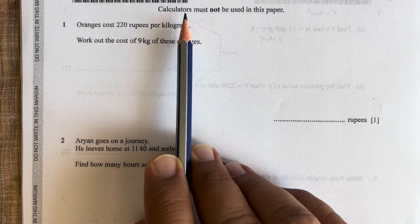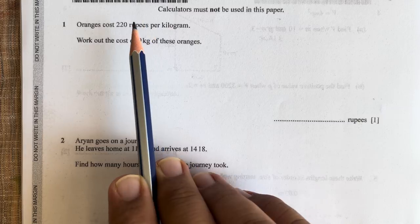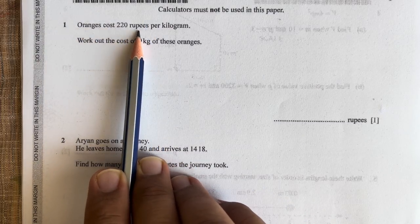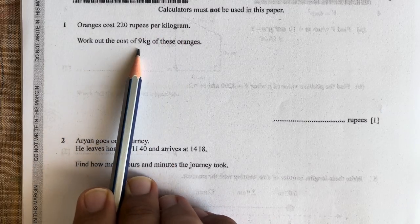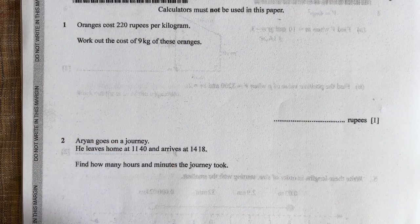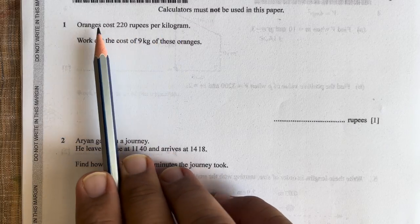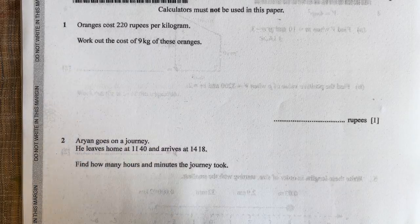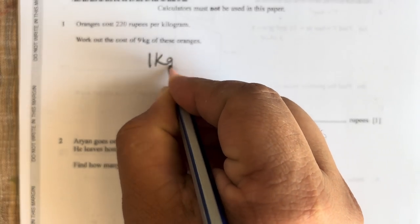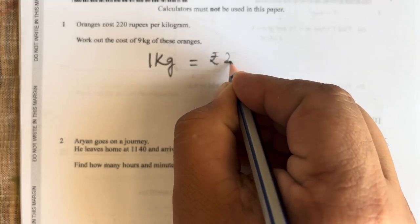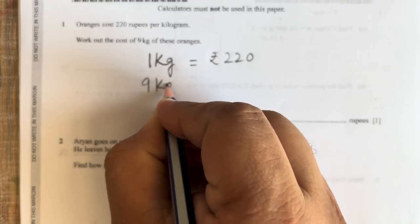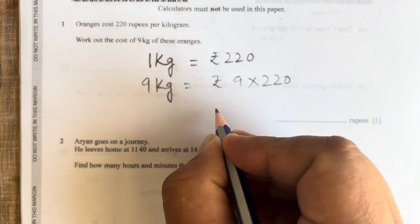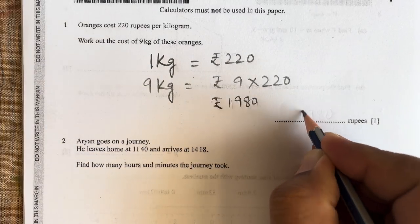Here the note is given: calculator must not be used in this paper. Question number 1: Oranges cost 220 rupees per kilogram. Work out the cost of 9 kg of these oranges. We have been given that 1 kg of oranges is 220 rupees, and we have to find the cost of 9 kg. So 1 kg of oranges is 220 rupees. 9 kg will be equal to rupees 9 × 220.